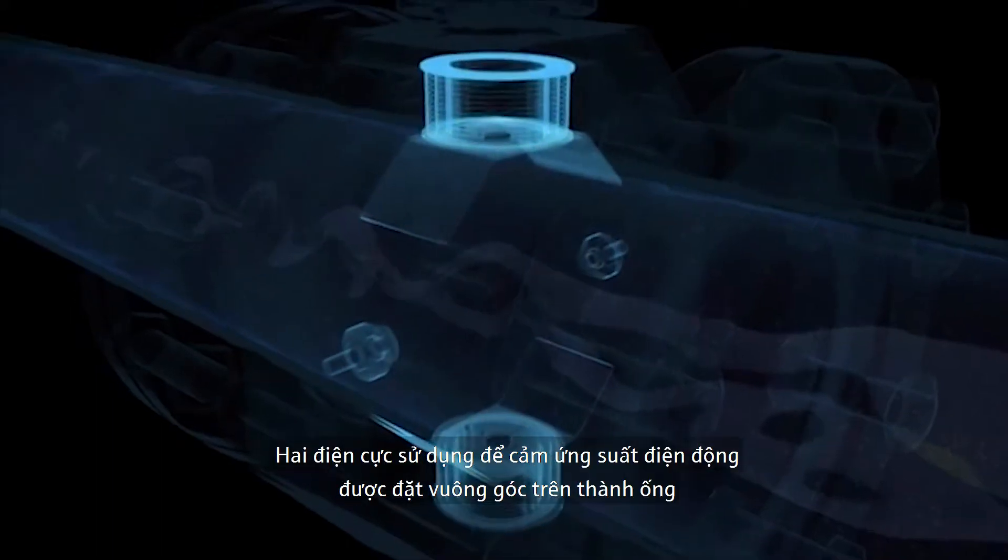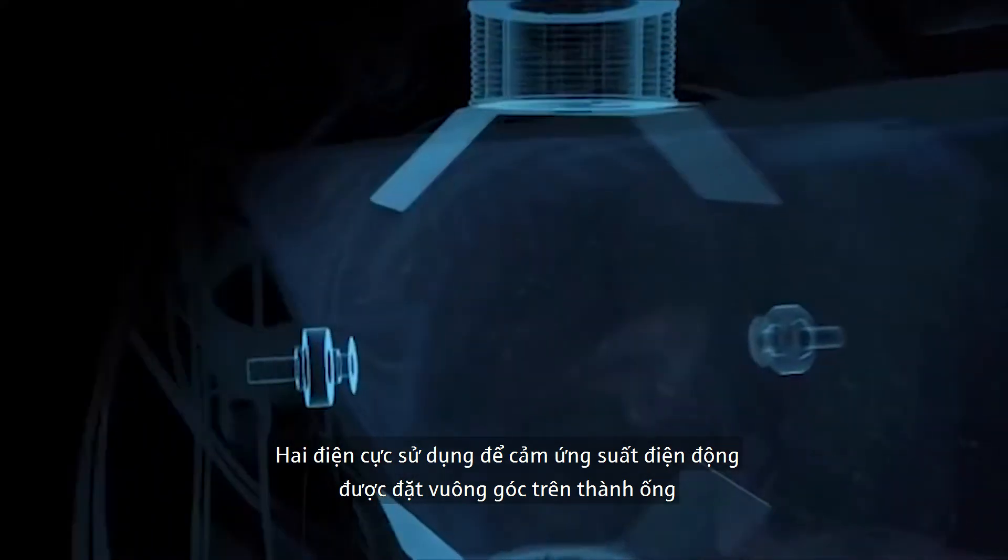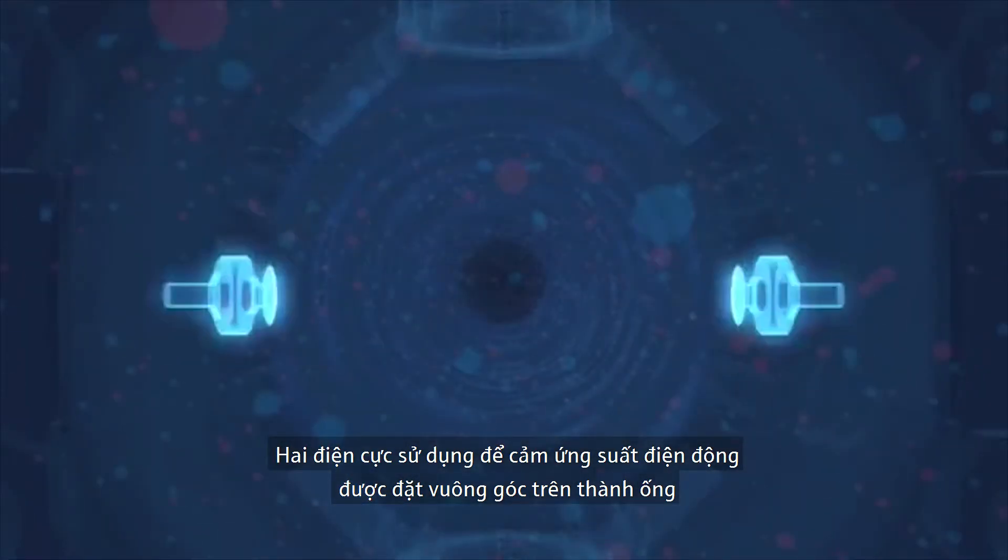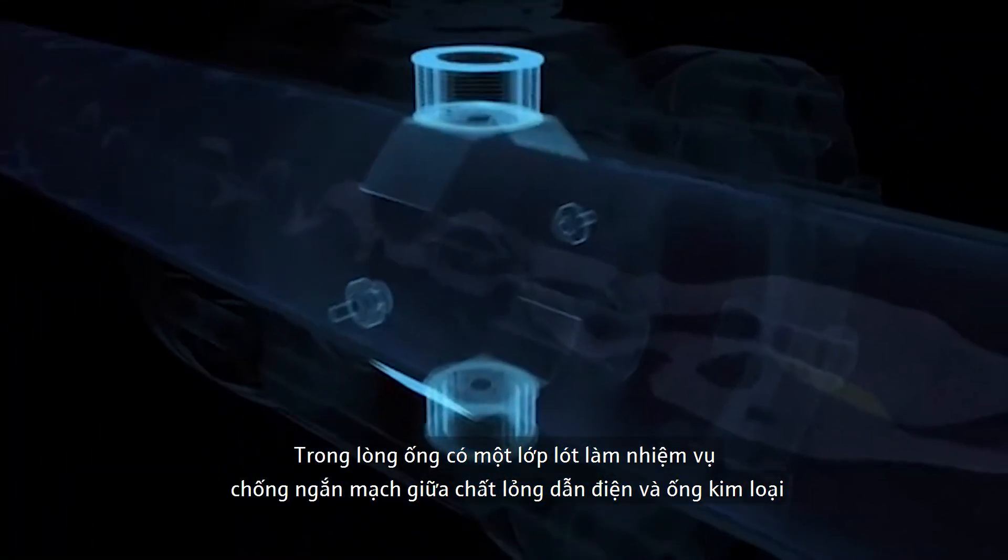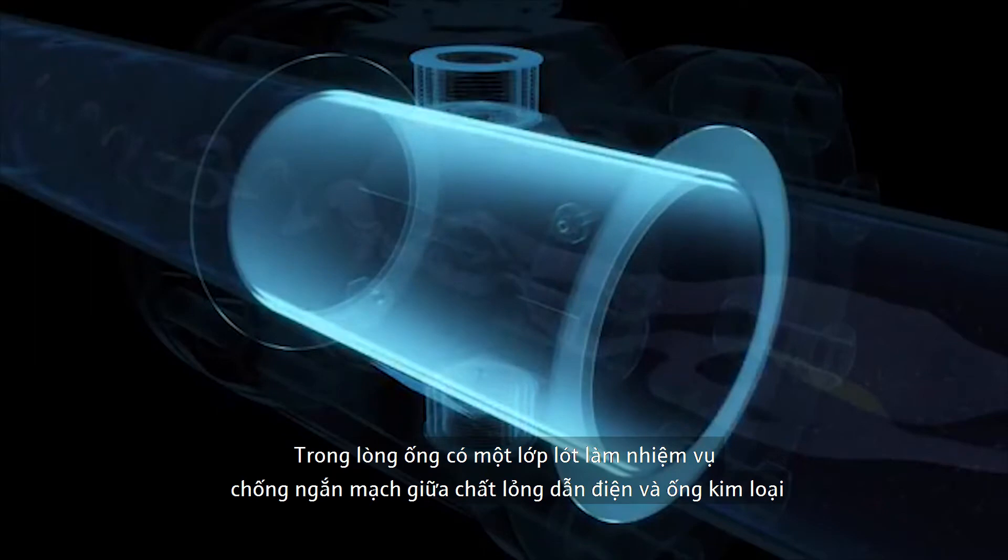Two electrodes which can pick up electrical voltages are installed at a right angle in the wall of the tube. The lining fitted on the inside wall prevents electrical short circuits between the conductive liquid and the metallic tube.